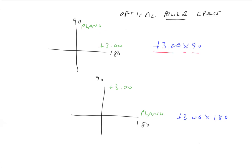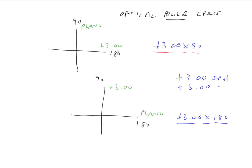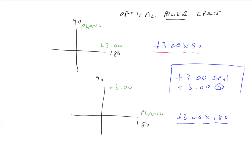Looking at the bottom lens, it's still a plus 3 cylindrical lens, but now the axis is along the 180 degree meridian. So we say plus 3 axis 180. It's the same lens, just held in a different way. If it were a plus 3 spherical lens, all we would write is plus 3 sphere — plus 3 S with a circle around it, or just plus 3 S. There's no directionality, no axis — we just say it's a plus 3 spherical lens. But if it's a plus 3 cylindrical lens, we have to specify the power and the orientation of that lens.